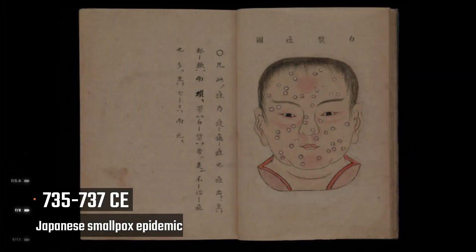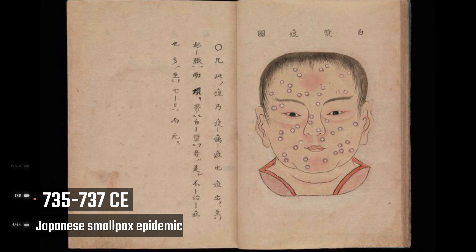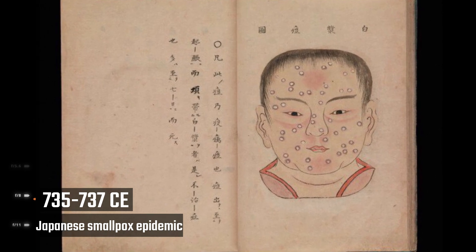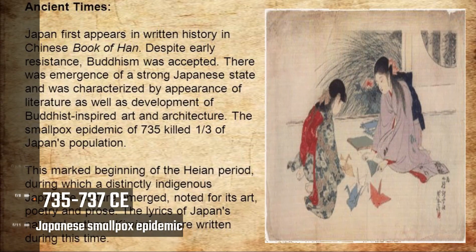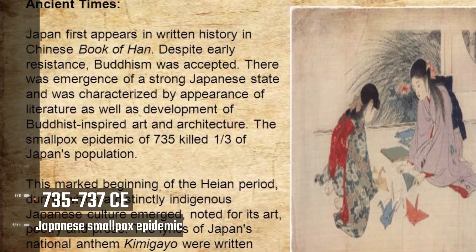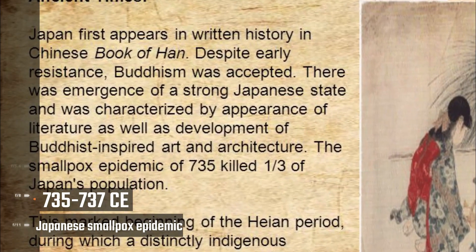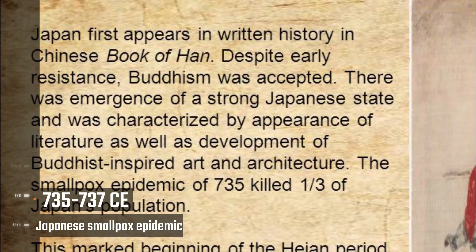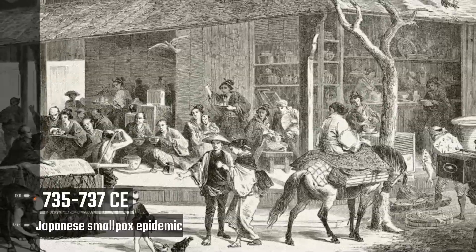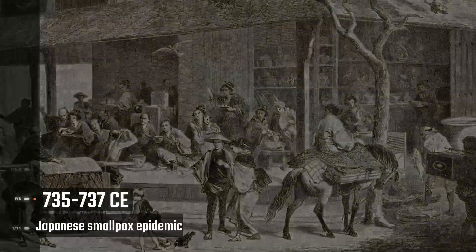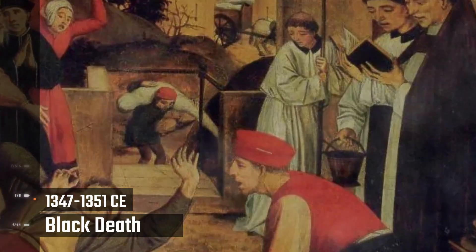Japanese Smallpox Epidemic, 735 to 737 CE. The existence of smallpox in Japan can be traced back as far as written history goes, leaving its inception somewhat shrouded in mystery. The first record of the epidemic states that it started in August 735. The variola major virus killed approximately a third — roughly one million — of the entire Japanese population, and the epidemic had significant social, economic, and religious repercussions throughout the country.